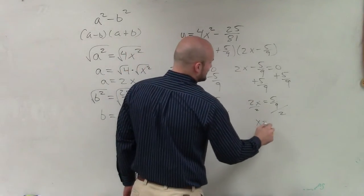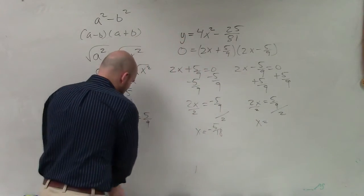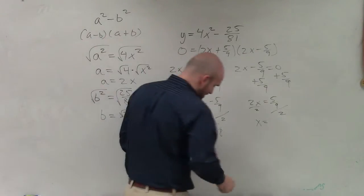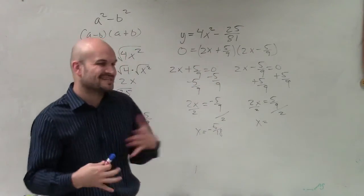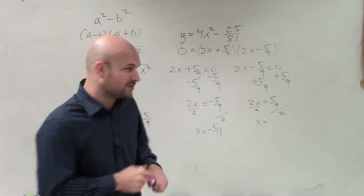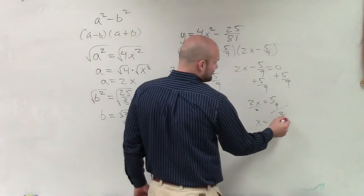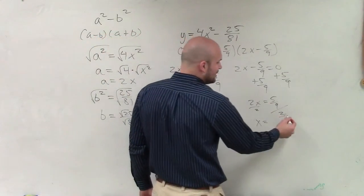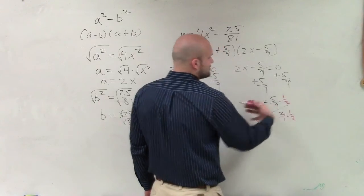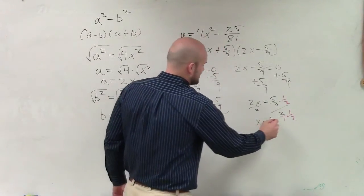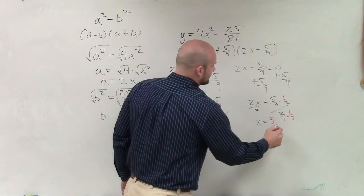And x equals, now again, if you don't know where I got that, since you're dividing by 2, you can always multiply. Remember when we were dividing fractions, instead of dividing fractions, multiply by the reciprocal. Well, that's the same case. I can pretend that's a fraction of 2 over 1 and multiply by the reciprocal. So therefore, that's going to give me positive 5 over 18.